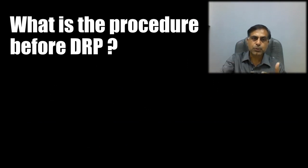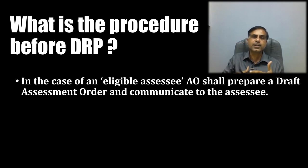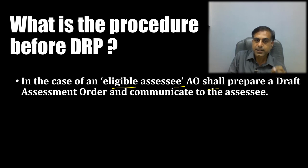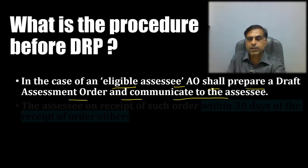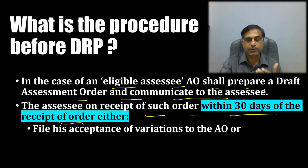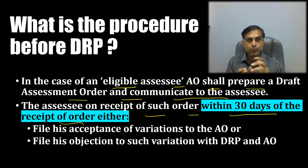Now let me put up the procedure before DRP. Non-residents are one of the big categories presently facing DRP-related aspects — they are probably not aware that the AO is giving them a draft order and what to do next. If they are agreeing, they have to pay the tax or settle the case. If not agreeing, they have to approach the DRP. The AO will prepare a draft assessment order and communicate it to the assessee. The assessee, on receipt of such order within 30 days, either files acceptance of the variations to the AO, or files objections to such variation with the DRP as well as the AO.